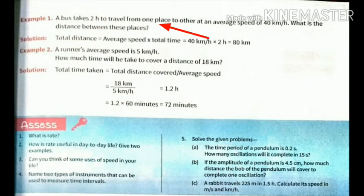A bus takes two hours to travel from one place to another at an average speed of 40 km per hour. So what is the distance between these places? We have to find out distance. As we know, distance equals speed times time, so we get 40 times 2 and we get 80 km distance covered by the bus.